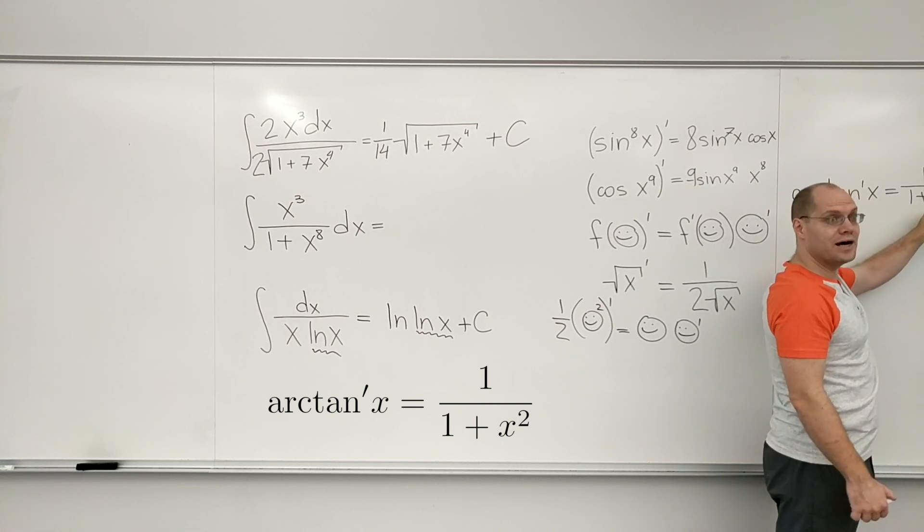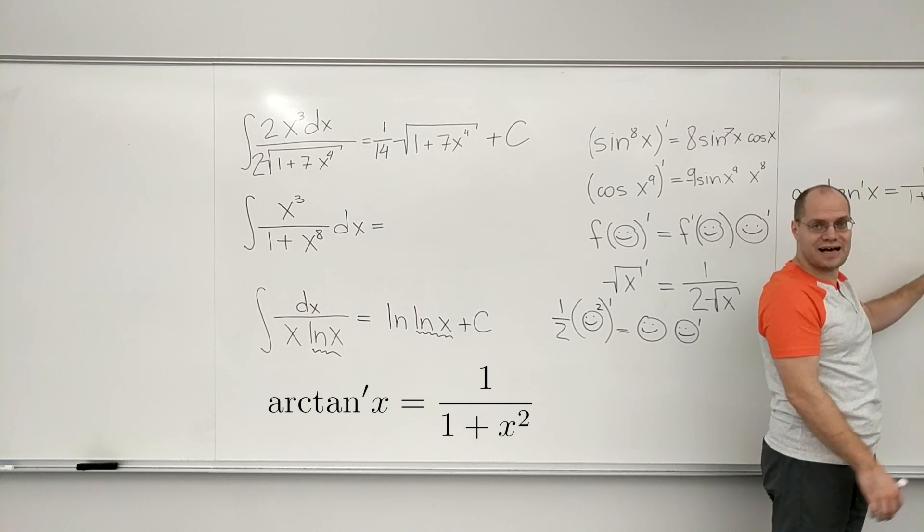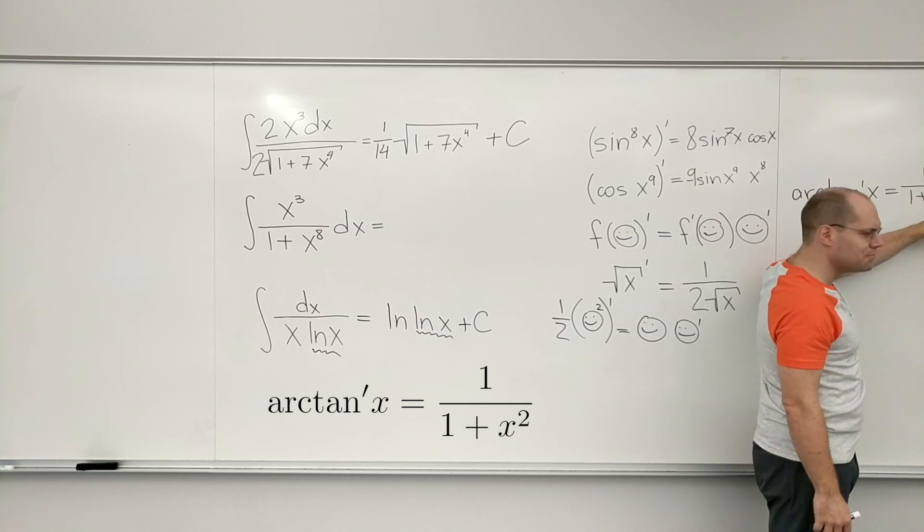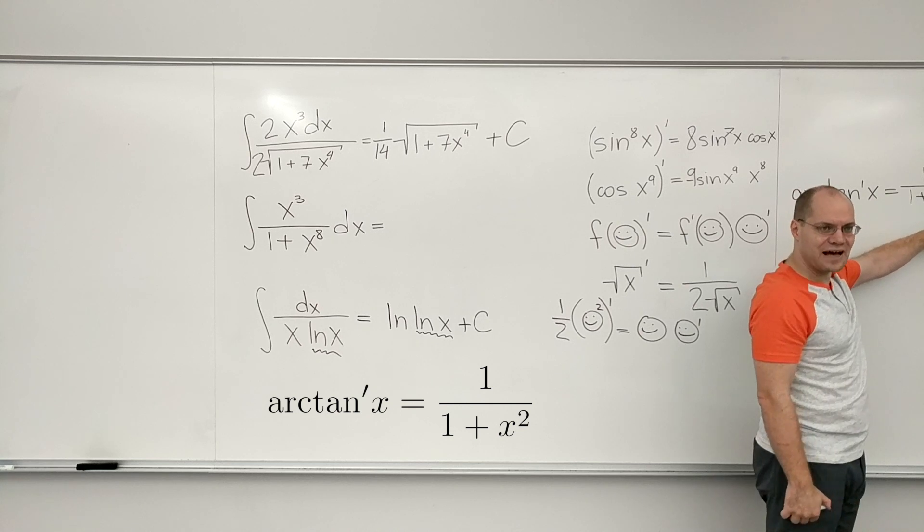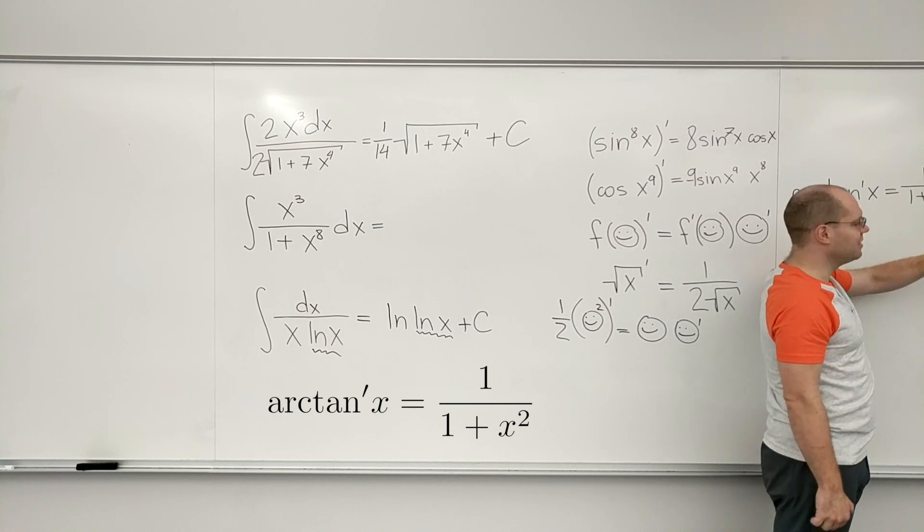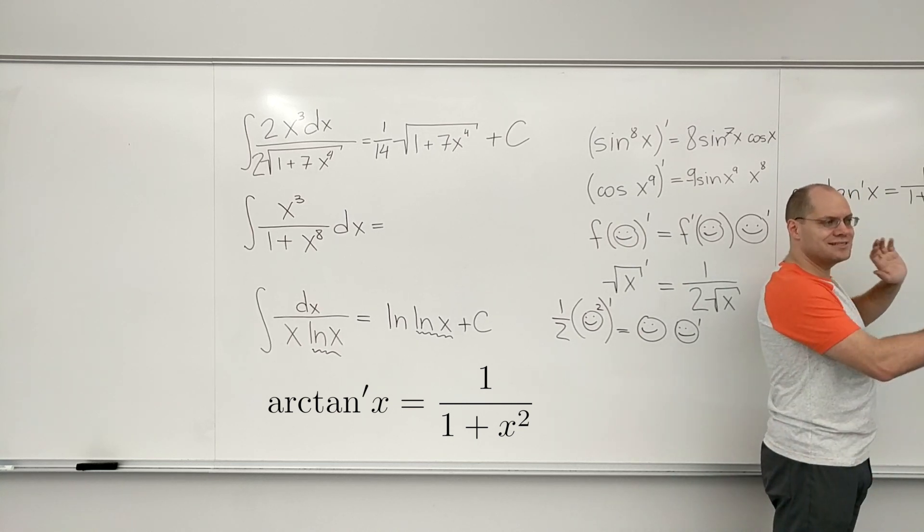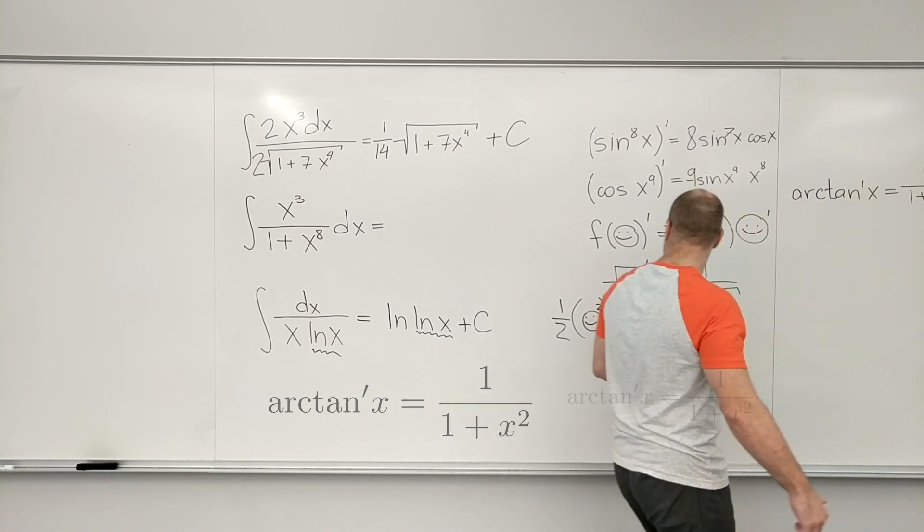It's very different from 1 minus x squared, which you can factor. It's a stubborn little combination. You can't factor it, you can't simplify it, you can't do away with it. If it's there, it's there. There's nothing you can do about it.